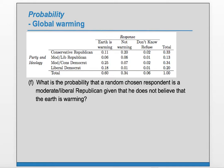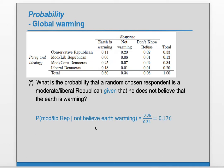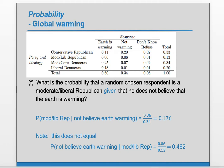Part F: what is the probability that a randomly chosen respondent is a moderate Liberal Republican, given that he does not believe the Earth is warming? Given we're in the 'not believe Earth is warming' group, we want the probability of being moderate Liberal Republican. That's 0.06 divided by 0.34, giving us 0.176. Notably, this does not equal the reverse conditional probability — not believing Earth is warming given moderate Liberal Republican — because the denominator changes to 0.13, showing these conditional probabilities are not equal to each other.